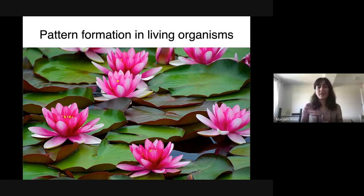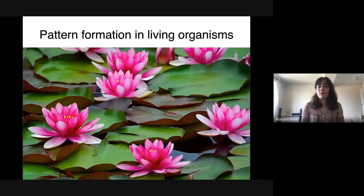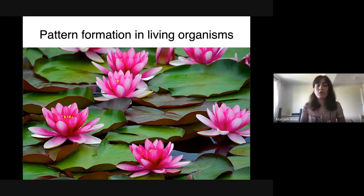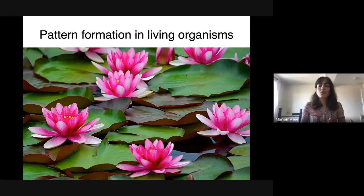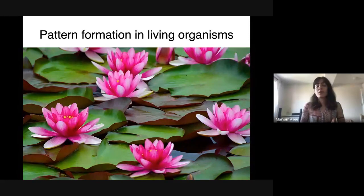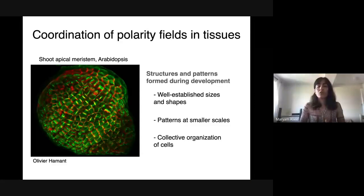Flowers, like many other multicellular organisms, represent interesting patterns and shapes. They have different organs that develop during development with well-defined structures formed by collective interaction and organization of cells. It's a good example of an out-of-equilibrium system and a self-organized system, usually characterized by well-established sizes and shapes.